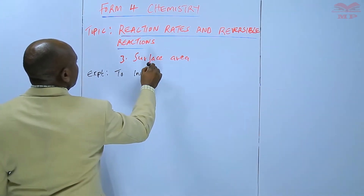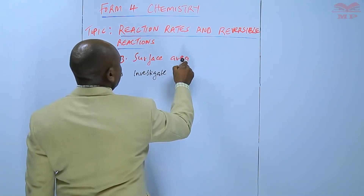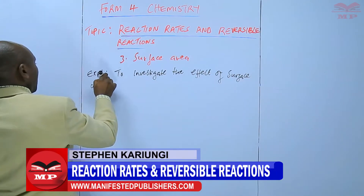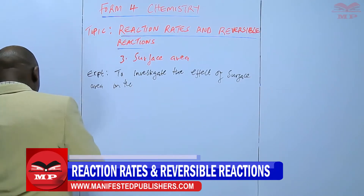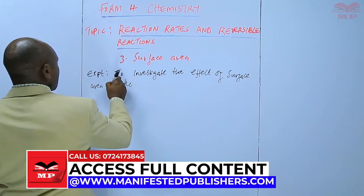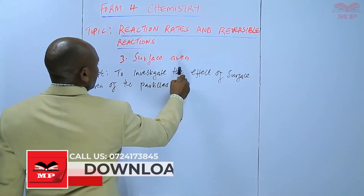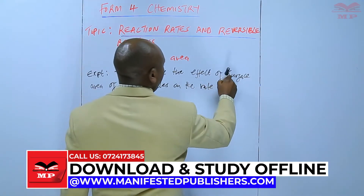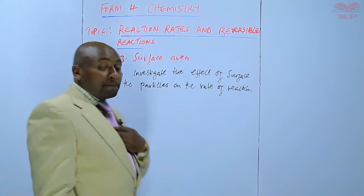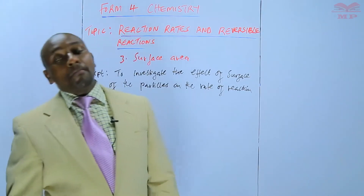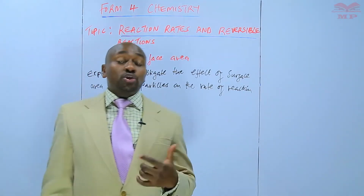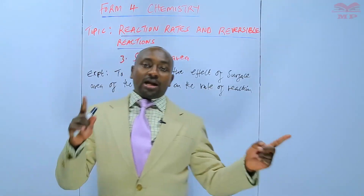The experiment is to investigate the effect of surface area on the rate of reaction. We shall use marble, whereby one sample will be in powdered form — very fine particles — and the other will be in chips form, slightly bigger particles. But we shall use the same mass of marble chips and powdered marble.